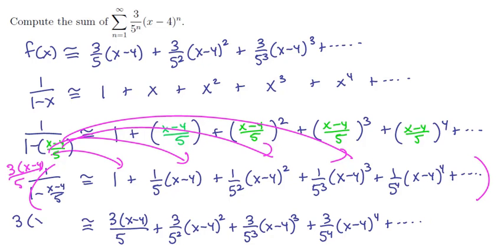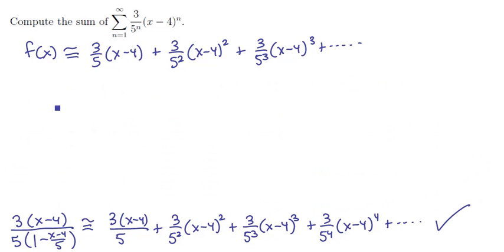So if we take 3(x minus 4) divided by 5 times (1 minus (x minus 4) divided by 5), this function right here has exactly the same Taylor series as it was before. We just manipulated 1 over (1 minus x) until we got this series right here.